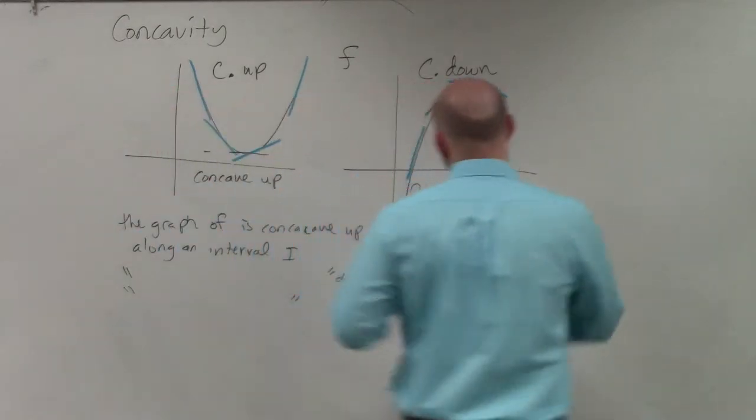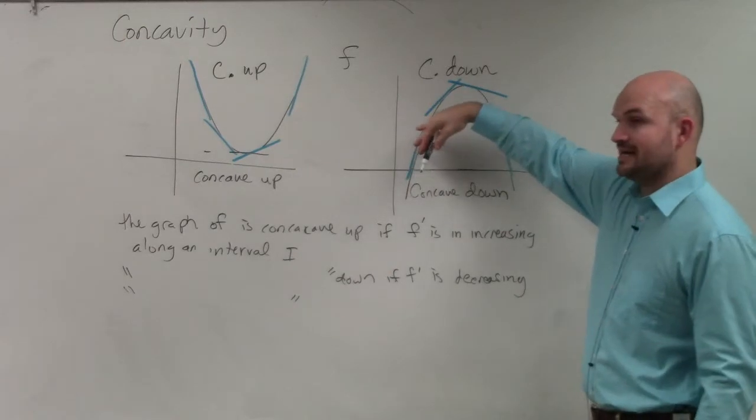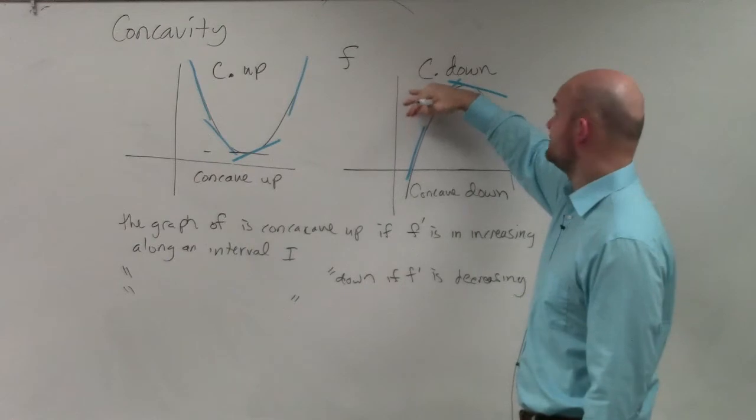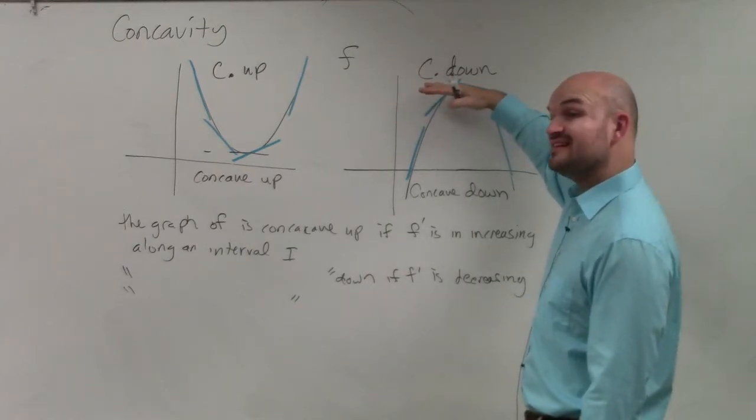So you can see here this is very positive, but it's getting less positive, less positive until it gets to zero. And then the slope turns negative.